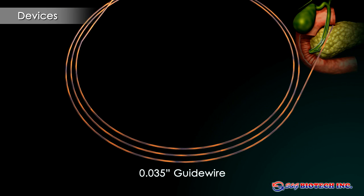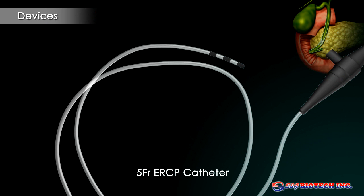The guide wire helps cross the stricture and guides the delivery system into place. It can also be used to assess the length of the stricture more accurately. The ERCP catheter is used to cannulate the bile duct and inject contrast to outline the biliary tree and the stricture.